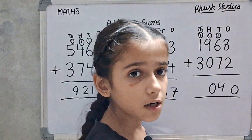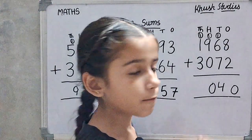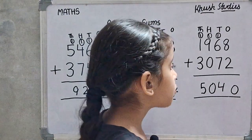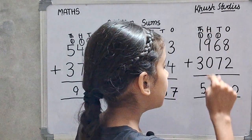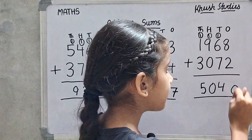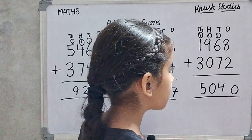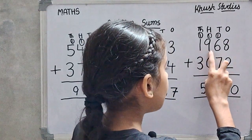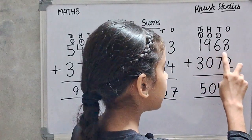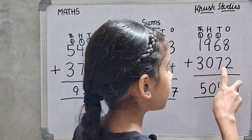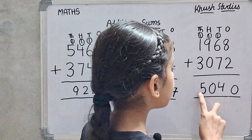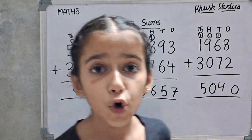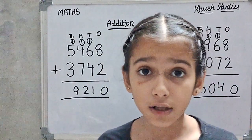1 plus 1 is 2, and 2 plus 3 is 5. So, 5,040. 1,968 plus 3,072 is 5,040. I hope you understand it — teach yourself.